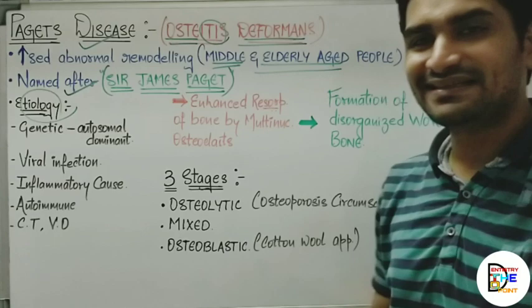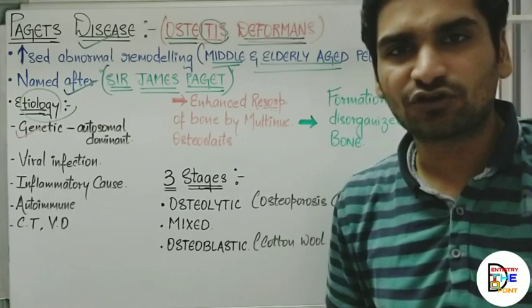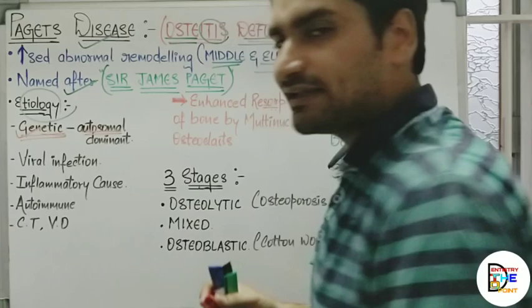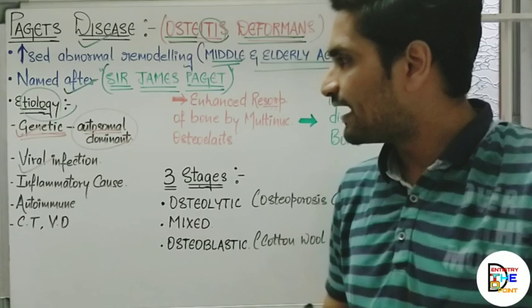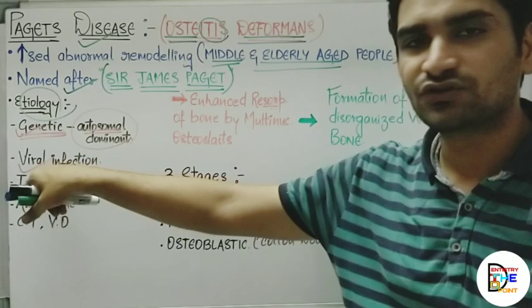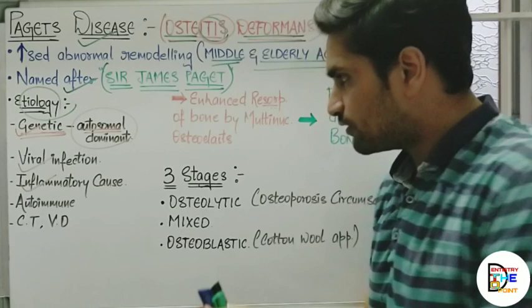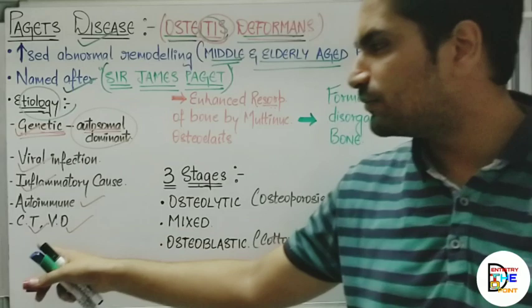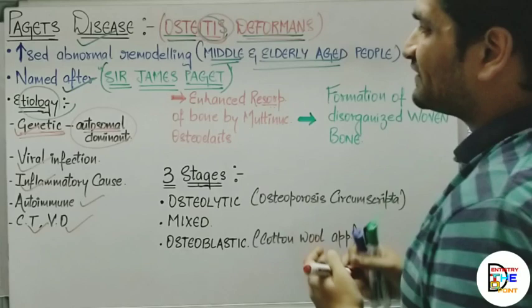Moving on to the etiological factors: no exact etiology has been found, but some factors show a relation with cases of Paget's disease. It can be genetically transferred — relatives of patients have also been found with the condition. It is mainly autosomal dominant. Viral infection is also a factor. Inflammatory causes, as well as autoimmune, connective tissue, and vascular disorders, are also considered etiological factors.